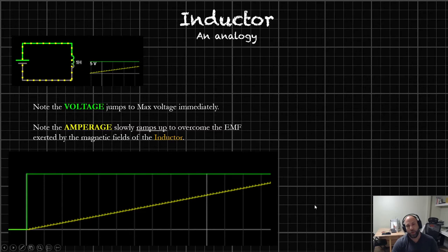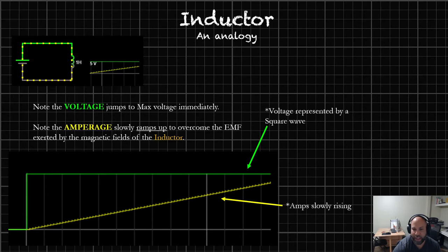If we were to look at this with a multimeter and look at the voltage and the amperage, when we close the circuit, the voltage is going to jump to max voltage immediately. Let's say this power source is 5 volts. It's going to be a square wave that jumps up to max voltage. But the amperage is not going to jump up to full amperage. It actually has to overcome the electromotive force. The voltage is represented in a square wave, straight up to max voltage, and then it's consistent. The amperage is slowly rising, ramping up.